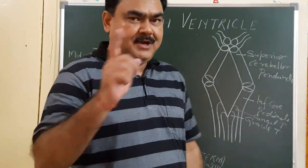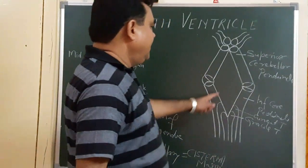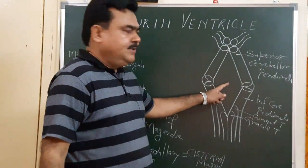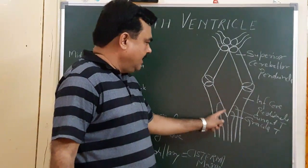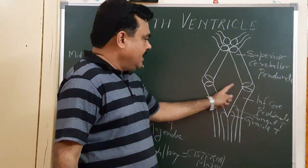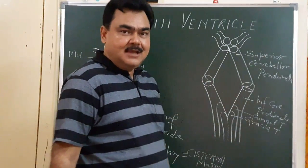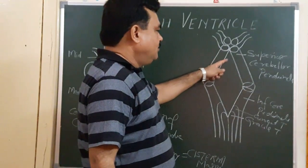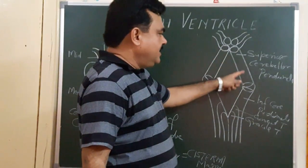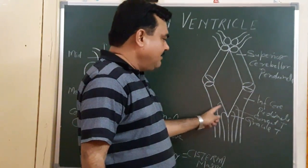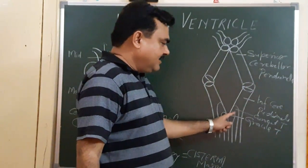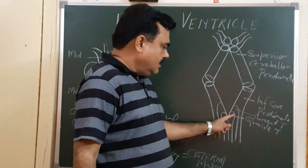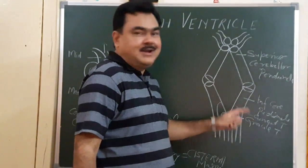The floor of the fourth ventricle is shown in this diagram. It has a superior angle, an inferior angle, right and left lateral angles. The lateral walls are bounded by the superior cerebellar peduncle superiorly, the inferior cerebellar peduncle inferiorly, and the middle cerebellar peduncle and the brachium conjunctivum.